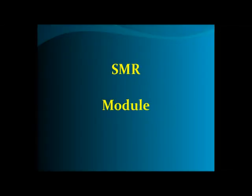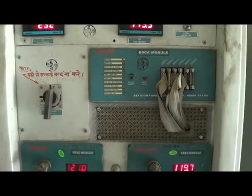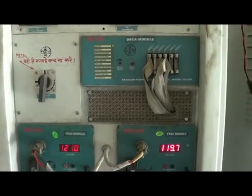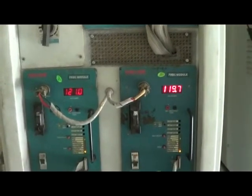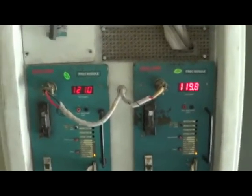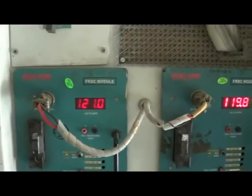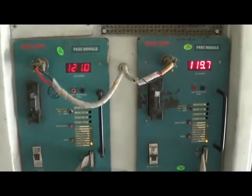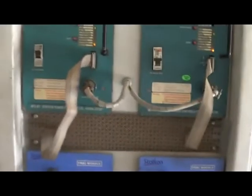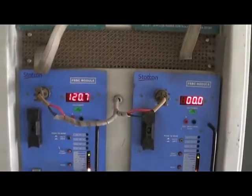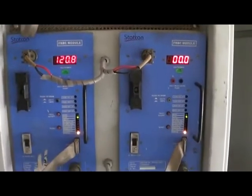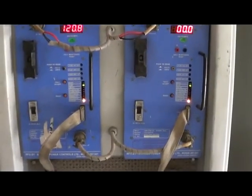The SMR panel consists of the FRBC (Float Rectifier Boost Charger) module. The FRBC modules are connected in an N+1 configuration, with each module rated at 110 volt, 20 ampere.